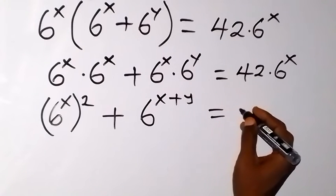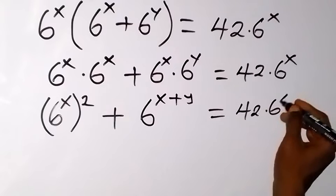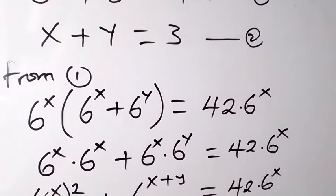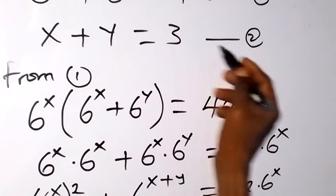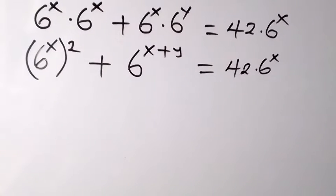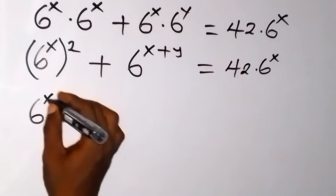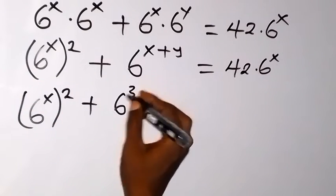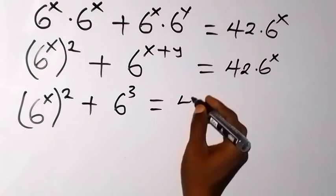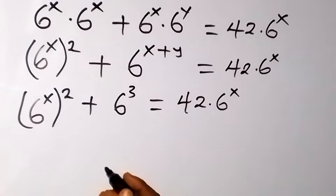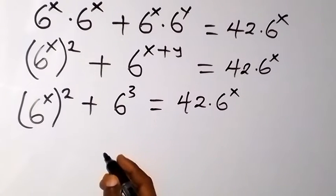So the equation becomes 6 raised to the power x squared, plus 6 raised to the power x plus y, equals 42 times 6 raised to the power x. From equation 2 we know x plus y equals 3, so we replace x plus y with 3, giving 6 raised to the power x squared, plus 6 raised to the power 3. And 6 raised to the power 3 is the same as 216.